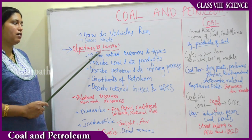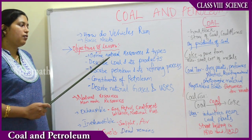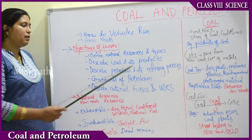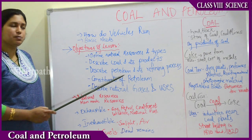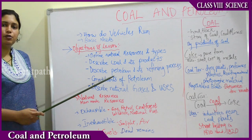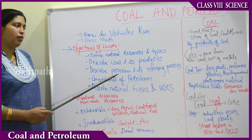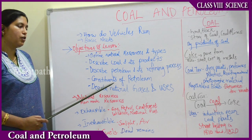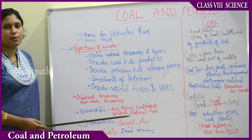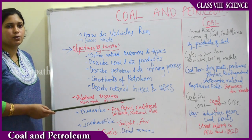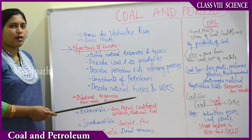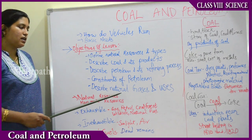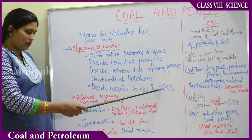By the completion of this lesson, the objectives are: you will learn what natural resources are and their types; you will be able to define coal and its products; you will be able to describe petrol and its refining process; you can understand the constituents of petroleum — kerosene, liquid paraffin, wax and many other things — and you can describe natural gases and their uses.